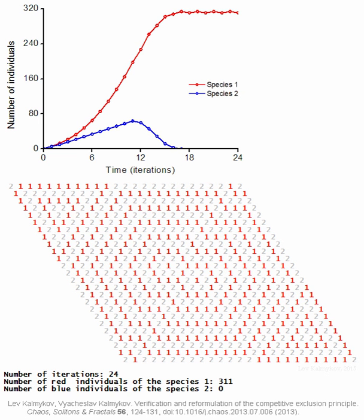Species area relationship: log S = log C plus Z log A, S = log C plus Z log A. Examples of individual-based models.